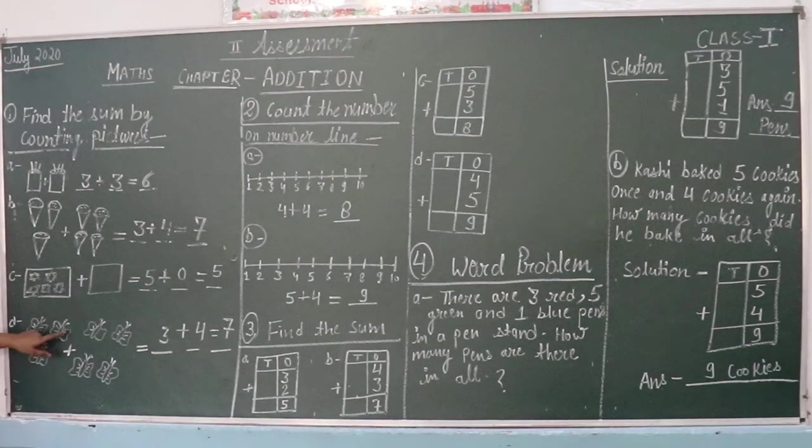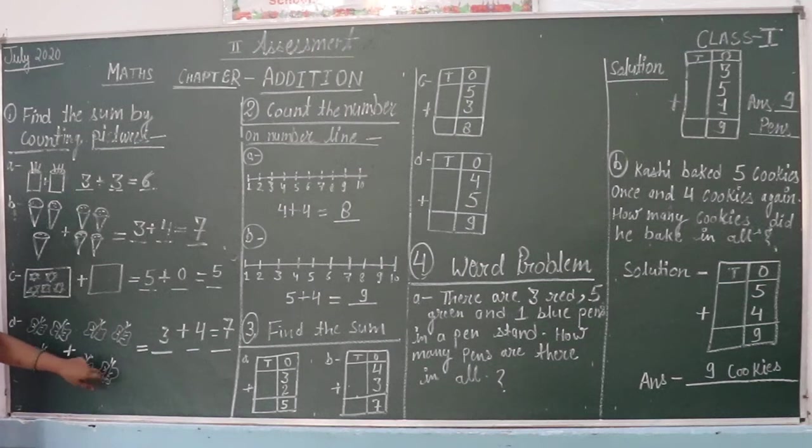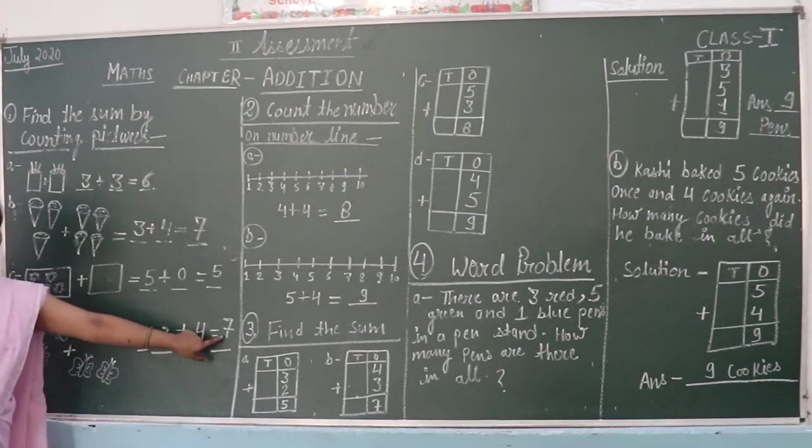Next. Butterfly is the answer. First, 1, 2, 3. Second, 1, 2, 3, 4. 3 plus 4 is equal to 7.